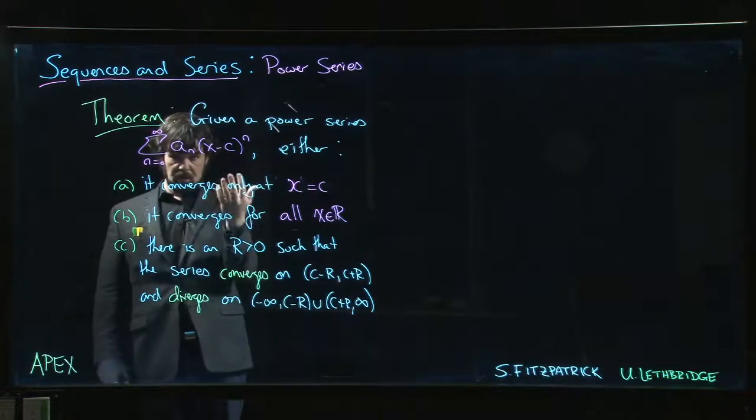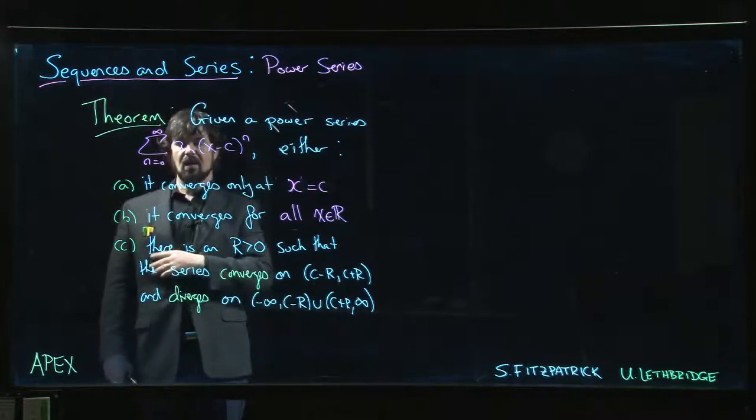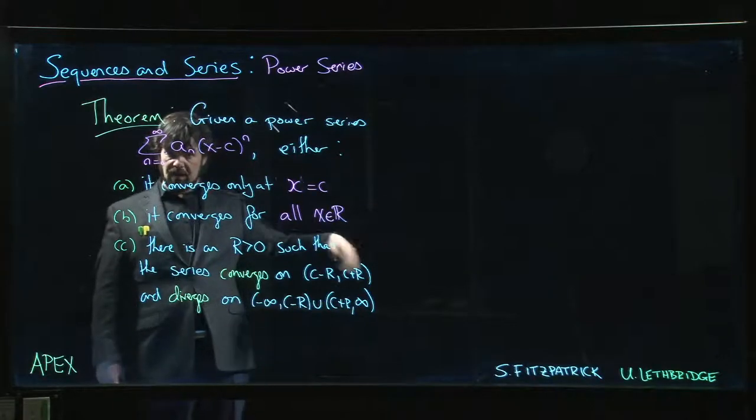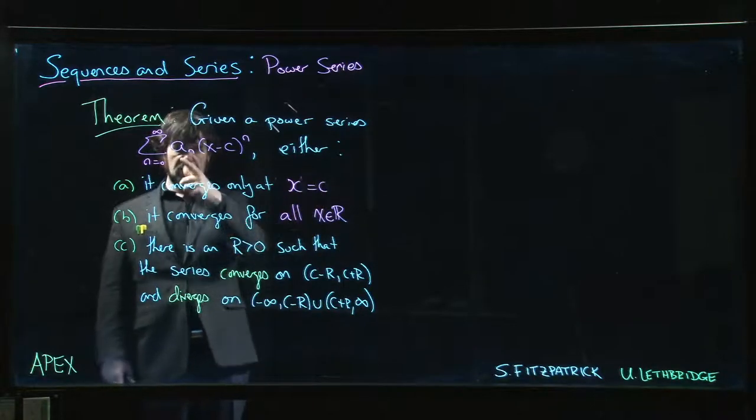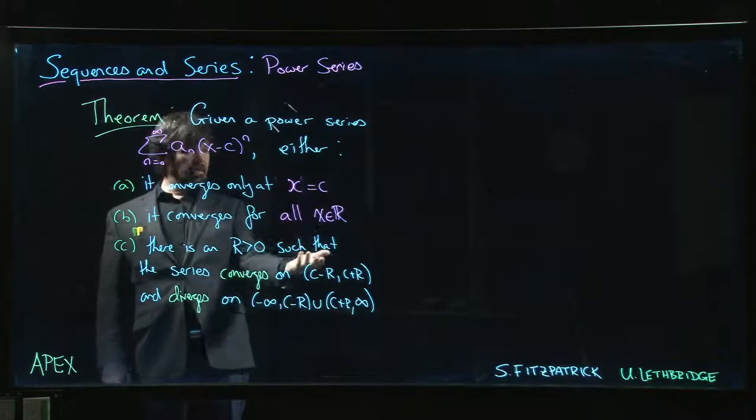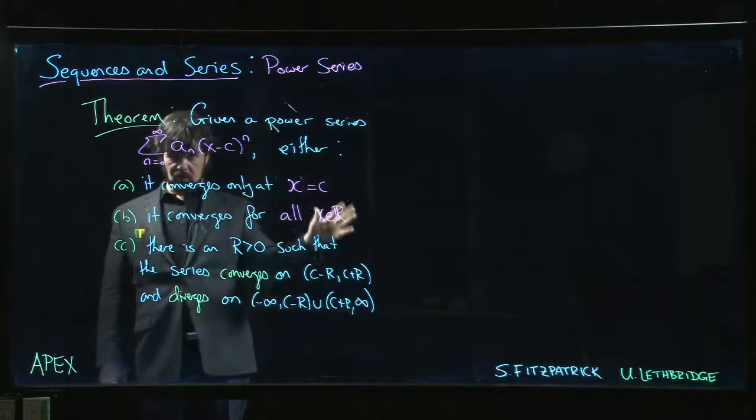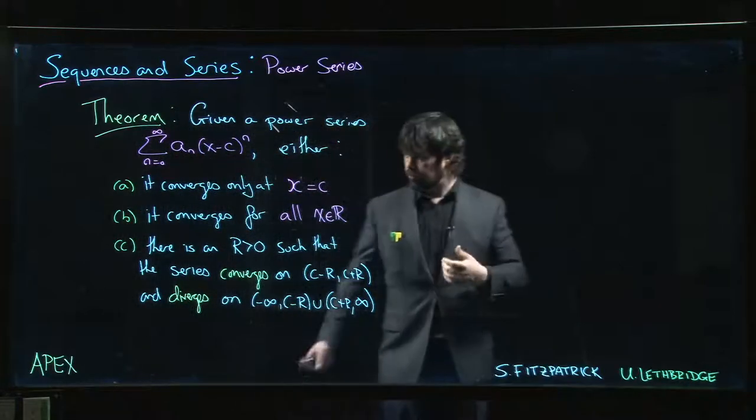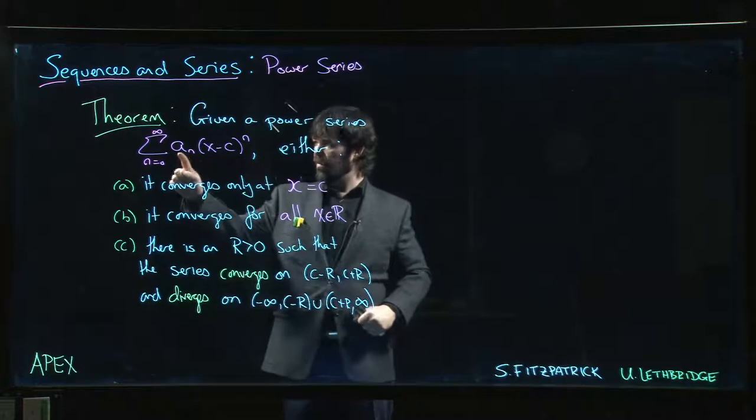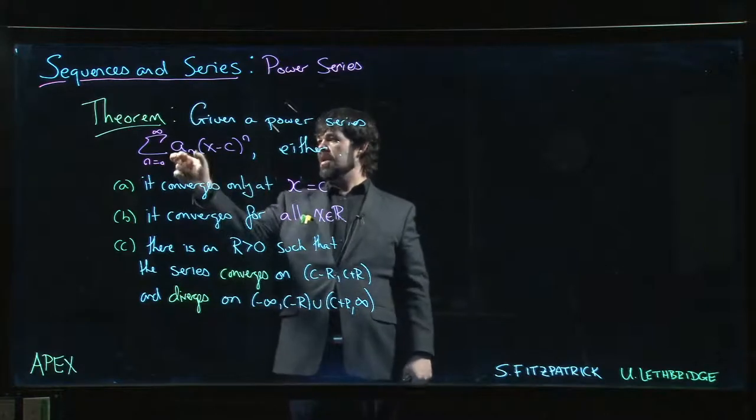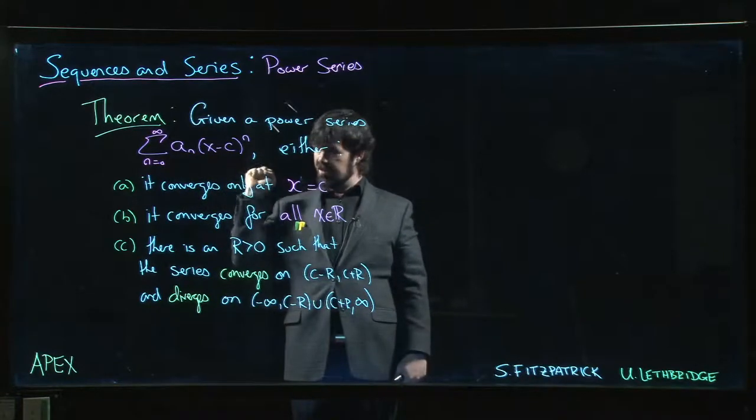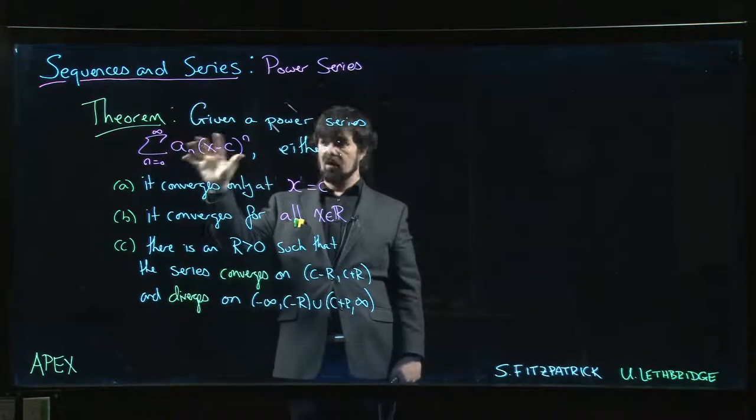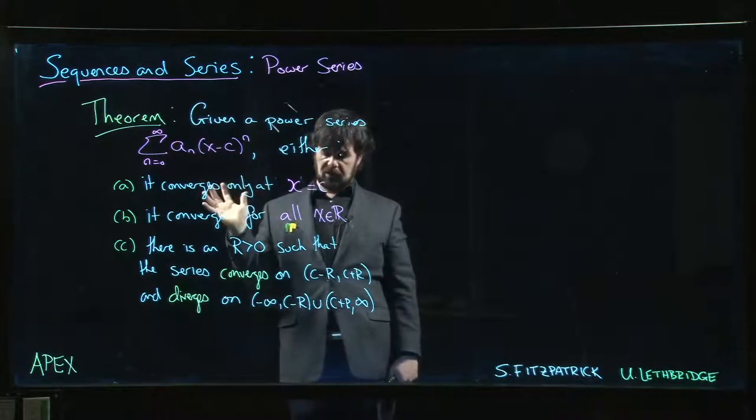One way that can happen is if you have a sequence that's eventually zero, and this is actually secretly a polynomial we've just written as a power series. If there's some maximum value of n so that for all n bigger than that these terms are just zero, then it's a polynomial and that's certainly going to happen. But we'll see that even if these terms go on forever, if they get small enough fast enough, we might still be able to guarantee that this series converges no matter what value you put in for X.